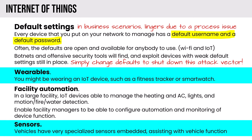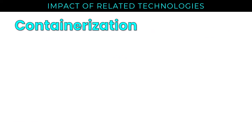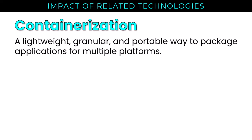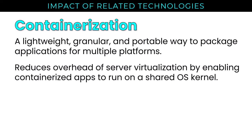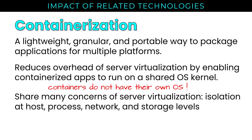IoT and wearables include fitness trackers and smartwatches. Facility automation using IoT devices manages heating and AC, lights, motion, fire, and water detection in large facilities, enabling facility managers to configure automation and monitoring. Containerization is a lightweight, granular, and portable way to package applications for multiple platforms. It reduces the overhead of server virtualization by enabling containerized apps to run on a shared OS kernel — containers do not have their own OS. They share many of the same concerns as server virtualization: isolation at the host, process, network, and storage levels.